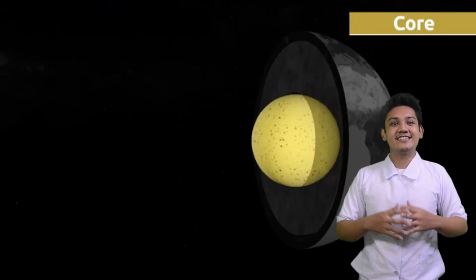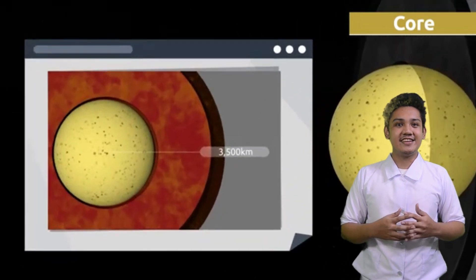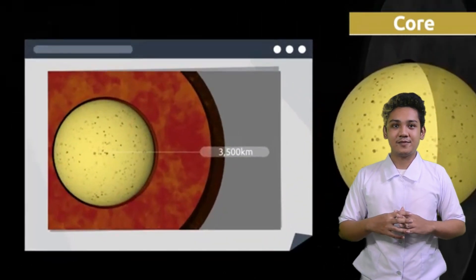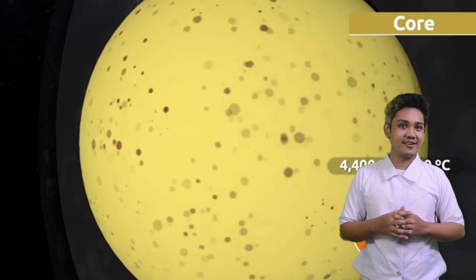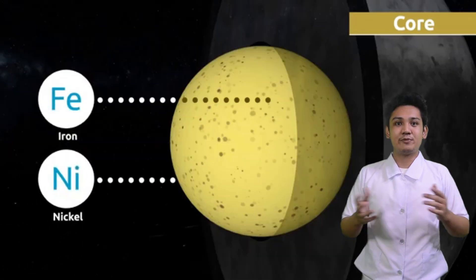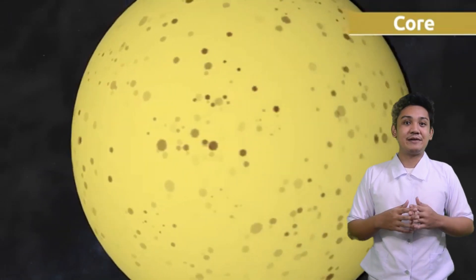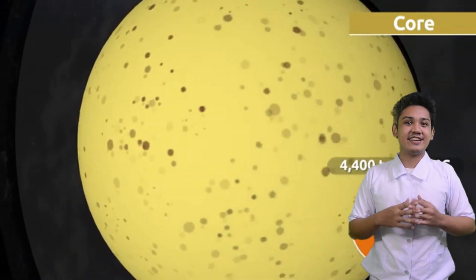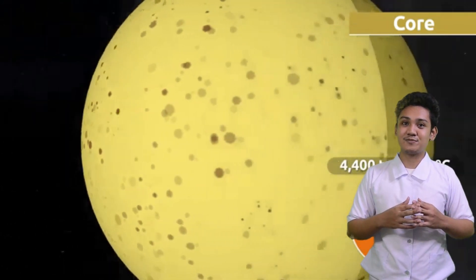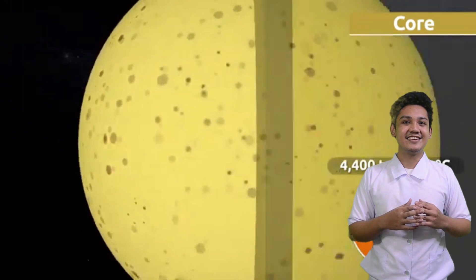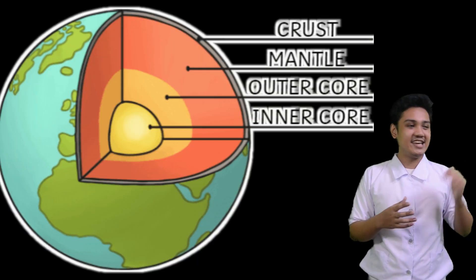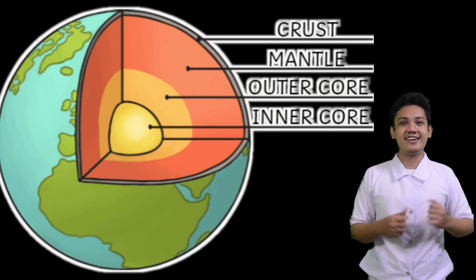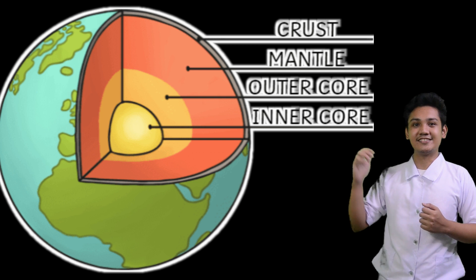And the core — it has a huge ball of liquid and solid iron, and it protects us from dangerous radiation from space. It is divided into two parts: the inner and outer core.